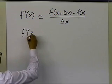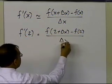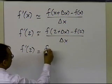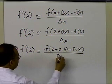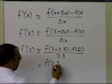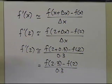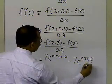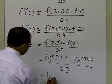We want to calculate f'(2), so that gives us [f(2 + Δx) − f(2)] / Δx. With delta x = 0.3, this becomes [f(2.3) − f(2)] / 0.3. Substituting the function: [7e^(0.5×2.3) − 7e^(0.5×2)] / 0.3. This number turns out to be equal to 10.265. That is the approximate value of the derivative of the function at x = 2.